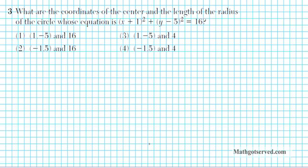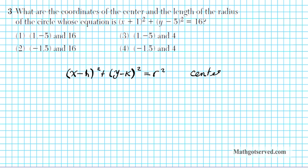Number 3 asks: what are the coordinates of the center and the length of the radius of a circle whose equation is (x plus 1) squared plus (y minus 5) squared equals 16? To solve this, you need to know the standard form of the equation of a circle: (x minus h) squared plus (y minus k) squared equals r squared.